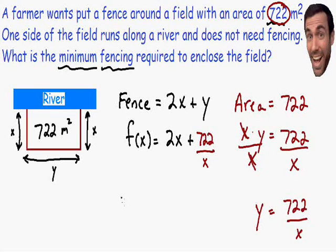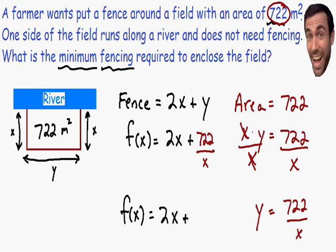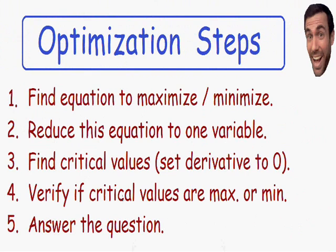Before moving on, I want to simplify a little further. Our function equals 2x, and I want to get x out of the denominator. Instead of writing 722 over x with a positive exponent in the denominator, I'll put it in the numerator with a negative 1 exponent: 722 times x to the negative 1. The reason is that it's easier to take the derivative this way. So let's move on to step number 3.